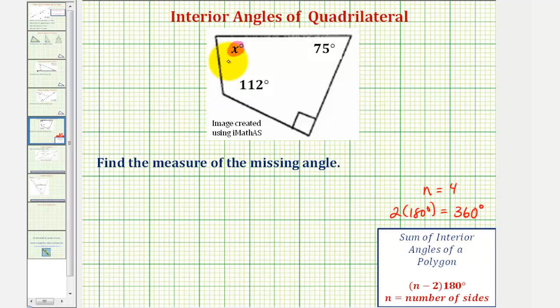Therefore, we can set up an equation to find the measure of angle X, where we would have X plus 112 plus, notice here we have a right angle, which measures 90 degrees, so we'd have plus 90, plus 75, equals 360.